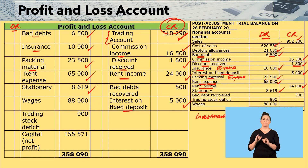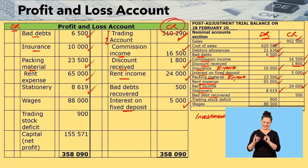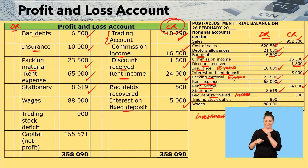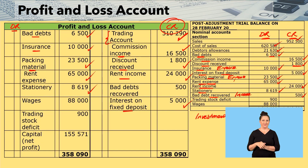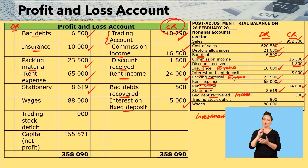The next one to consider is bad debts recovered. Bad debts recovered is income, hence you see it on the credit side of the nominal account section. When you have income, you credit it in the profit and loss account — bad debts recovered $500.